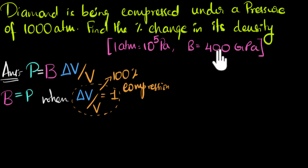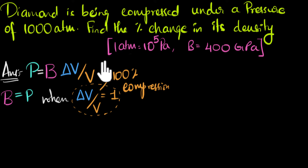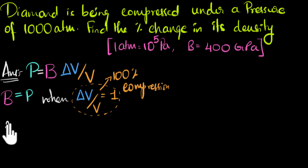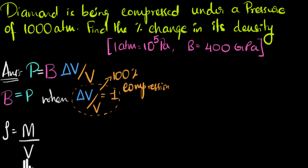With this in mind, we can understand that for diamond, 400 gigapascals is needed to compress diamond by 100%. So if the pressure is 1,000 atmospheres, how much will be the compression? But the problem is we are not asked how much compression this pressure produces — we are asked how much percentage change in density it produces. Density tells us how much mass is concentrated in a unit volume: density equals mass over volume. Since the volume is changing, density will also change, and we need to find delta rho over rho.